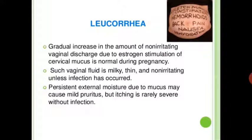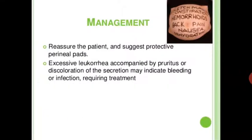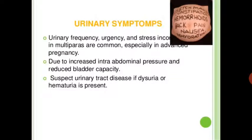Leucorrhea is a gradual increase in the amount of non-irritating vaginal discharge due to estrogen stimulation of cervical mucus, and is normal during pregnancy. Such vaginal fluid is milky, thin, and non-irritating unless infection has occurred. Persistent external moisture due to mucus may cause mild pruritus, but itching is rarely severe without infection. Management: reassure the patient, suggest protective perineal pads. Excessive leucorrhea accompanied by pruritus, discoloration, or secretion may indicate bleeding or infection requiring treatment.